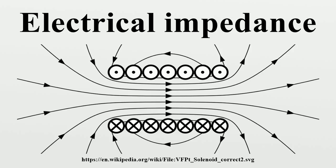The impedance of an ideal resistor is purely real and is referred to as a resistive impedance; the voltage and current waveforms are proportional and in phase. Ideal inductors and capacitors have a purely imaginary reactive impedance. The impedance of inductors increases as frequency increases; the impedance of capacitors decreases as frequency increases. In both cases, for an applied sinusoidal voltage, the resulting current is also sinusoidal but in quadrature — 90 degrees out of phase with the voltage. However, the phases have opposite signs: in an inductor the current is lagging, and in a capacitor the current is leading.